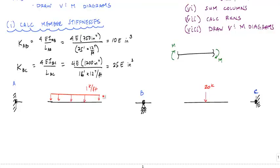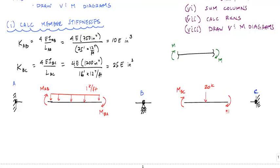At the ends of these members, I want to draw all moments as internally positive. This would be MBA and MAB. MAB is the moment in member AB closest to joint A; MBA is the moment in member AB closest to joint B. Similarly, going clockwise, this would be MBC and MCB. These four moments — MAB, MBA, MBC, MCB — are the things I am trying to solve for.